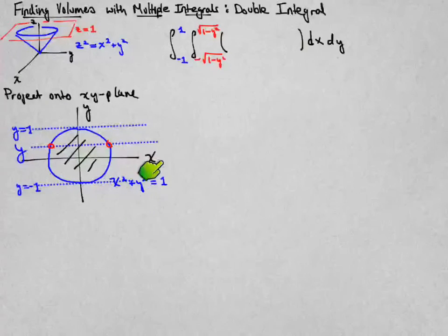Solve for x, and I get a positive or negative radical. This is the negative side, that's the positive side, and here's my limits of integration, the negative square root and the positive square root.